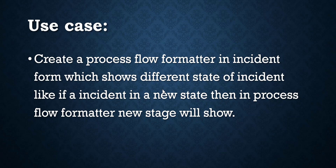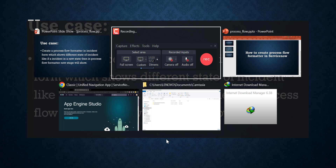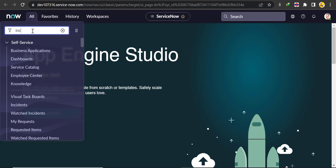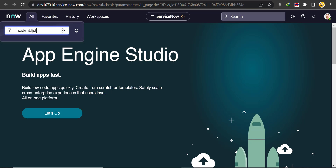For today's use case, we'll create a process flow formatter in the Incident form that shows the different states of an incident. For example, if an incident is in a New state, the New stage will be shown. If it's In Progress, it will show In Progress — and so on. Let's go to the instance and implement it.